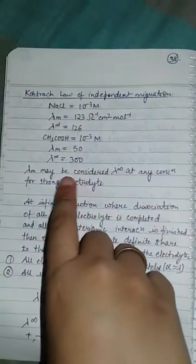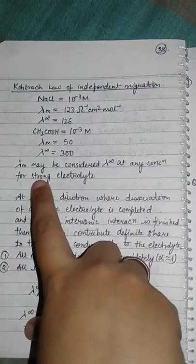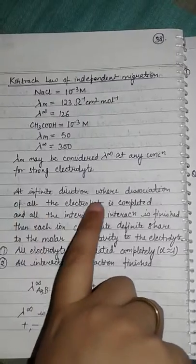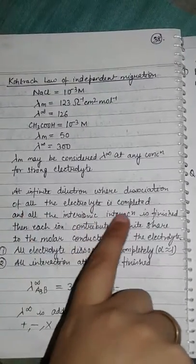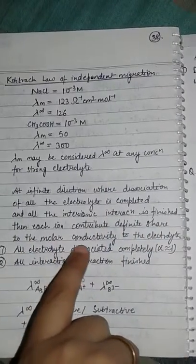Lambda M may be considered lambda infinity at any concentration for strong electrolyte. At infinite dilution where the association of all electrolyte is completed and all the inter-ionic interaction is finished, then each ion contributes definite share to the molar conductivity of the electrolyte.